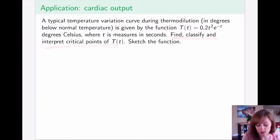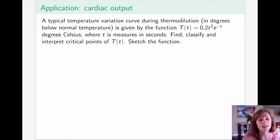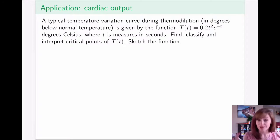Because this process is automated, we know what a normal temperature variation curve looks like, and it can be modeled by the function 0.2T² · e^(−T), where temperature is in degrees Celsius and T is measured in seconds after the injection of the cold solution. We would like to find, classify, and interpret critical points of this function, as well as sketch it — so we need to take the first derivative, find critical points, take the second derivative, find inflection points, and discuss intervals of increase, decrease, and concavity.